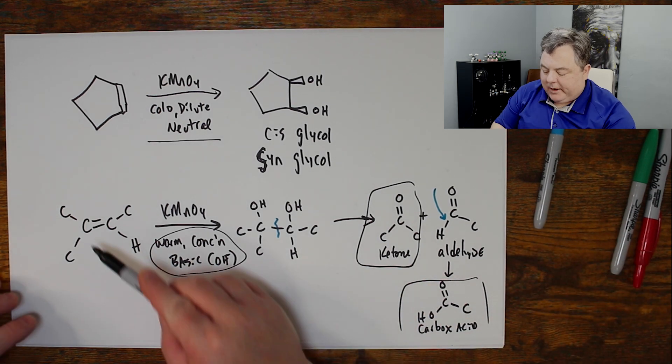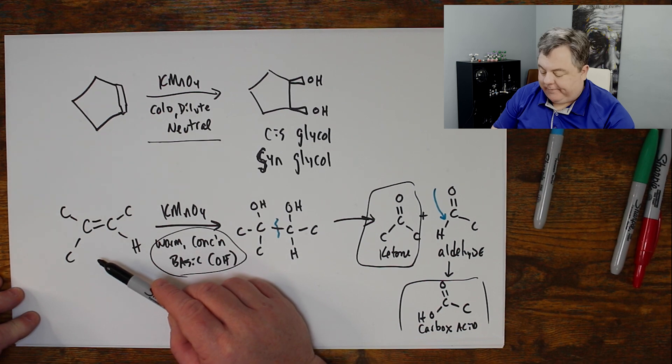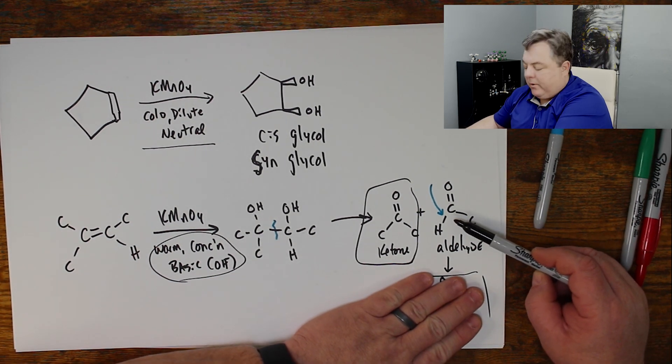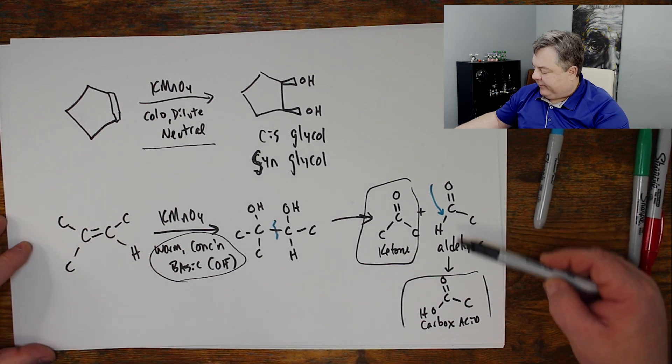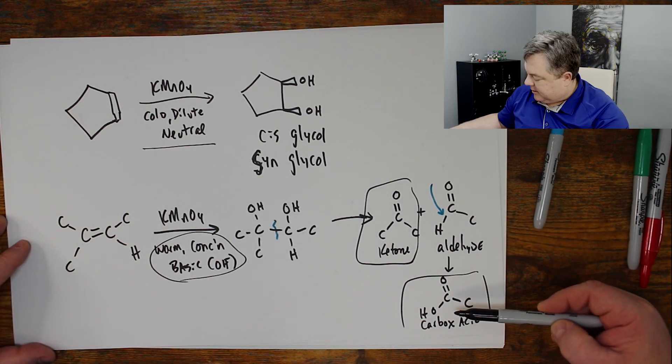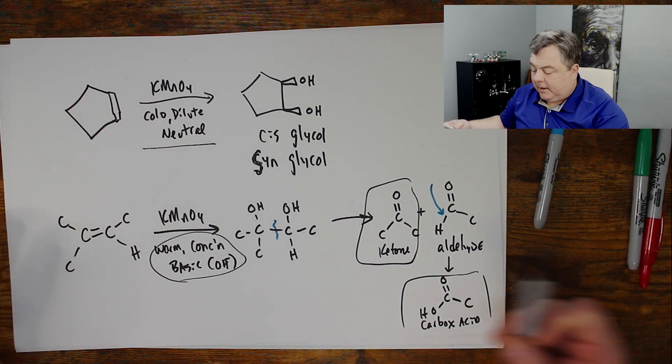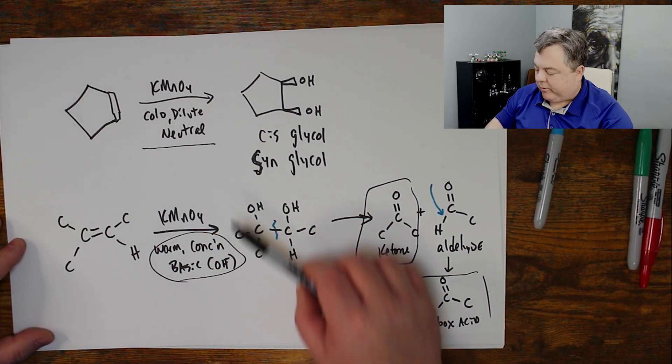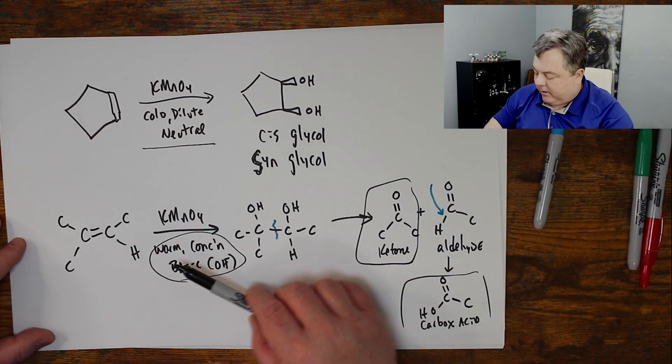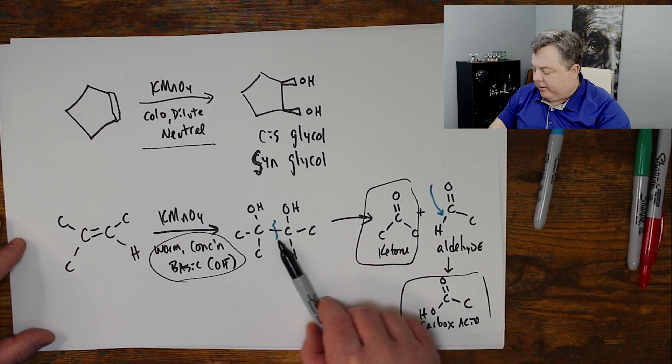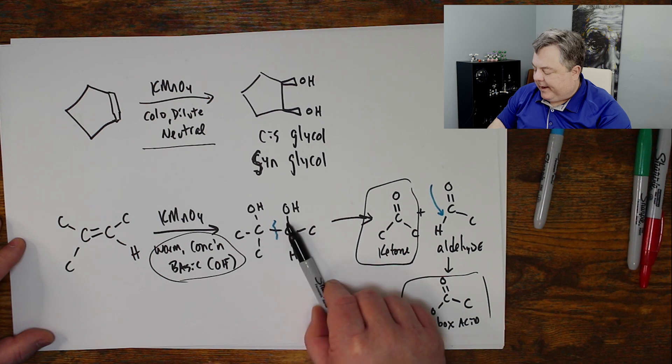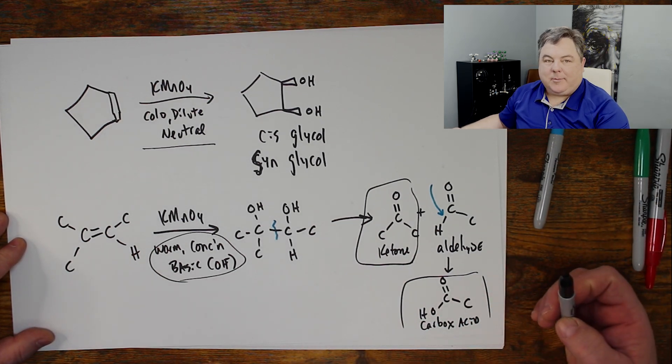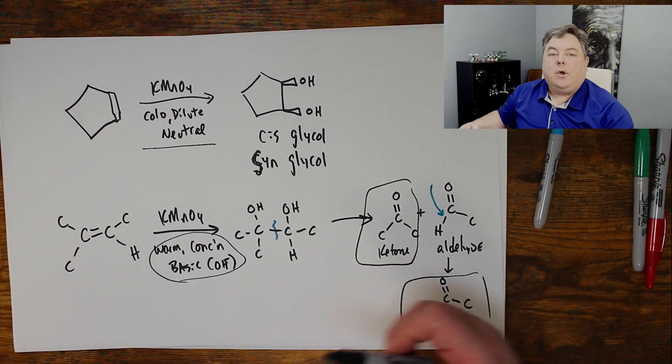It's sort of like what happens with ozone and ozonolysis, if you watched that video. Except ozone would stop here. It doesn't keep going. But KMnO4 takes aldehydes and further oxidizes the carboxylic acids. So that's cold dilute neutral KMnO4 or warm concentrated basic KMnO4. Whether it just makes the diol or whether it blows through the diol, chops it in half, keeps oxidizing ketones and aldehydes to carboxylic acids.